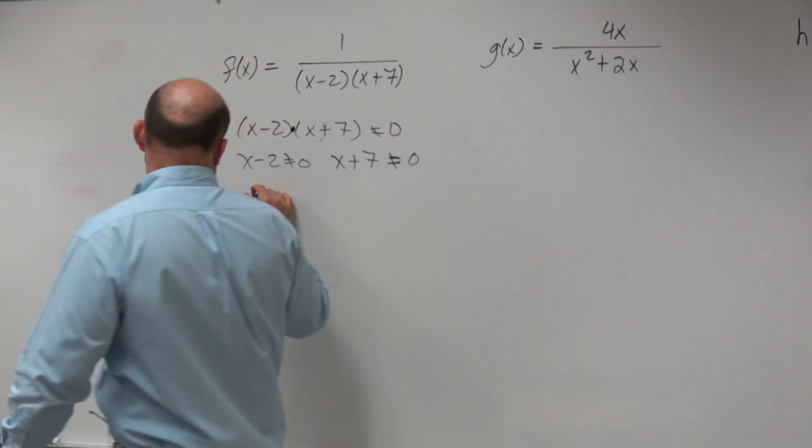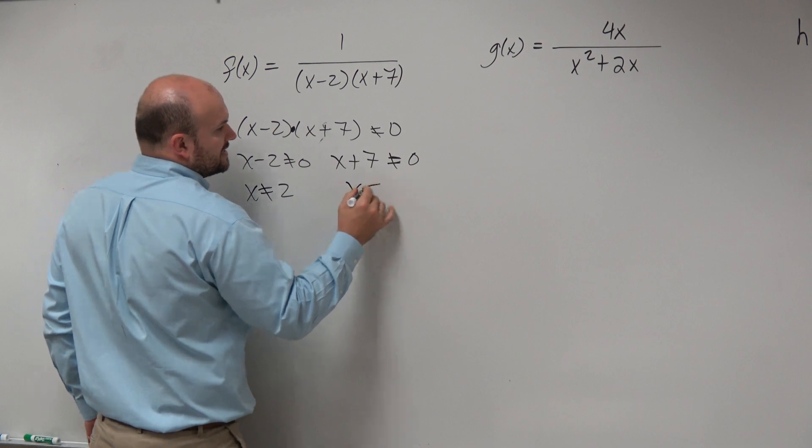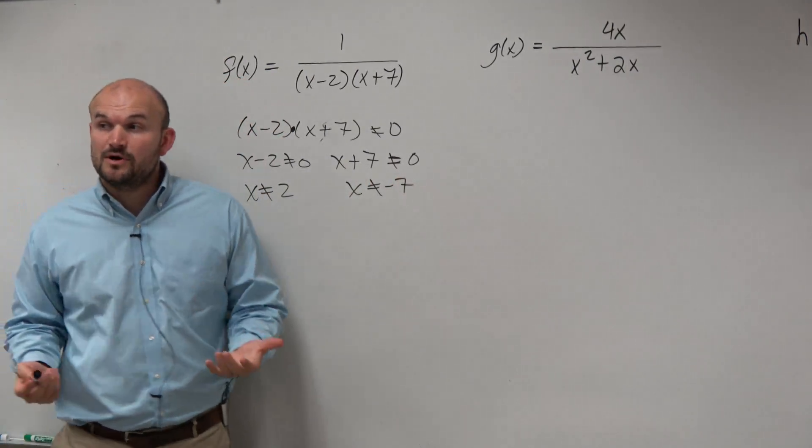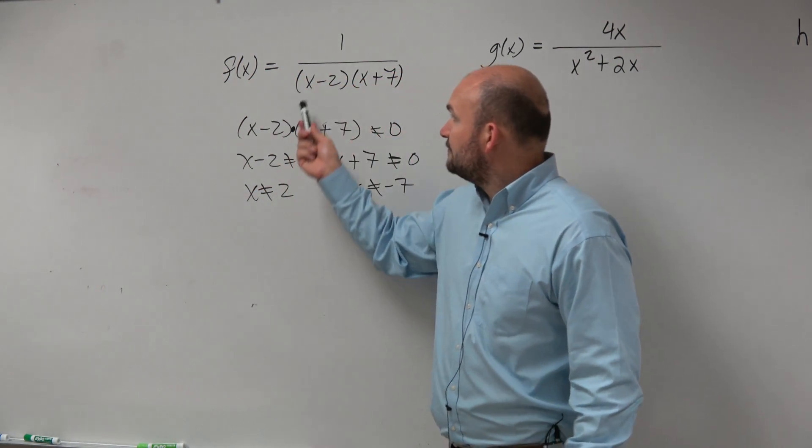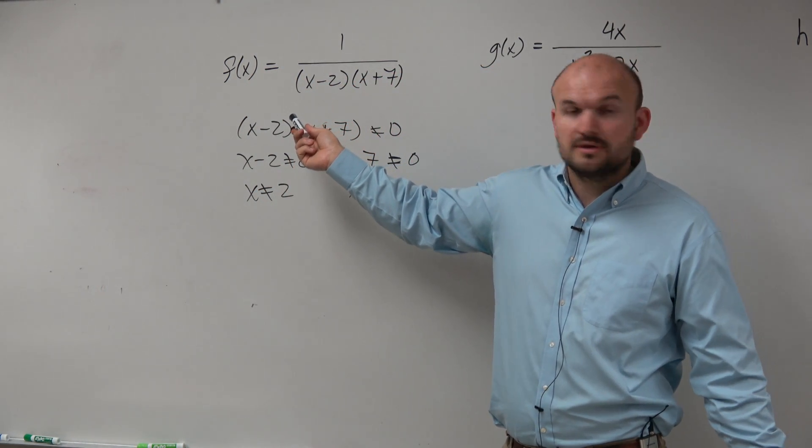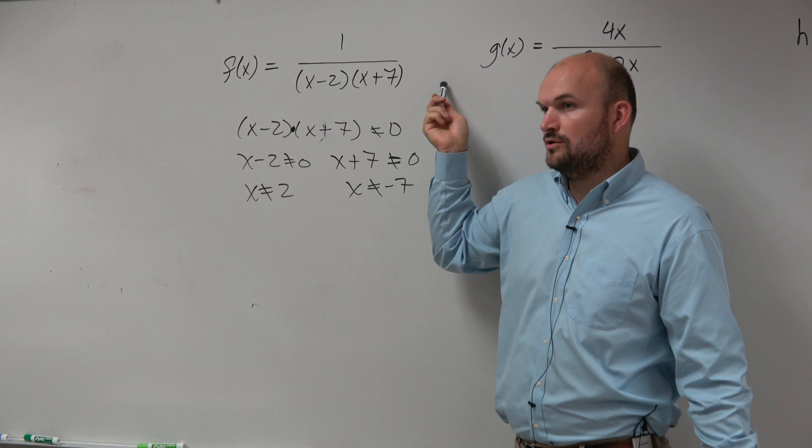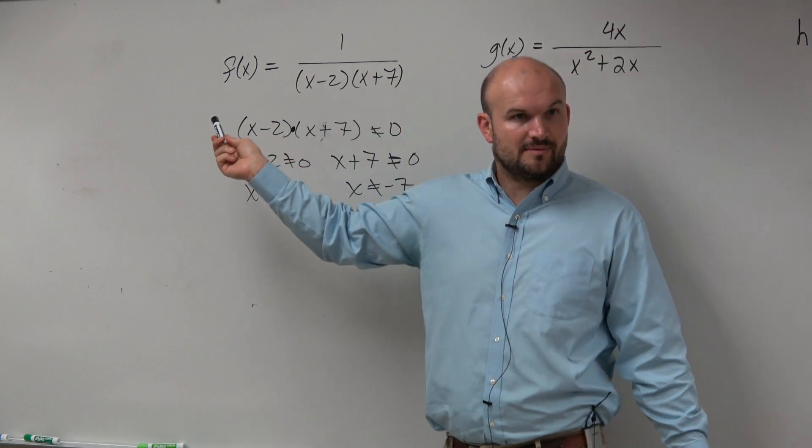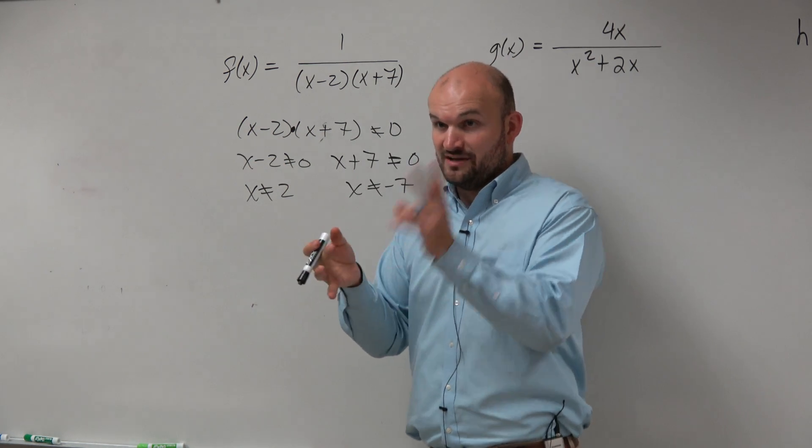So in this case, we have x cannot equal 2, and x cannot equal negative 7. All right? And the reason why this works is if, let's say, x was 2, then that would be 0. The rest of the denominator is 0. If x is negative 7, that's 0. The rest of the denominator is 0, right? So the function is undefined for two values now.